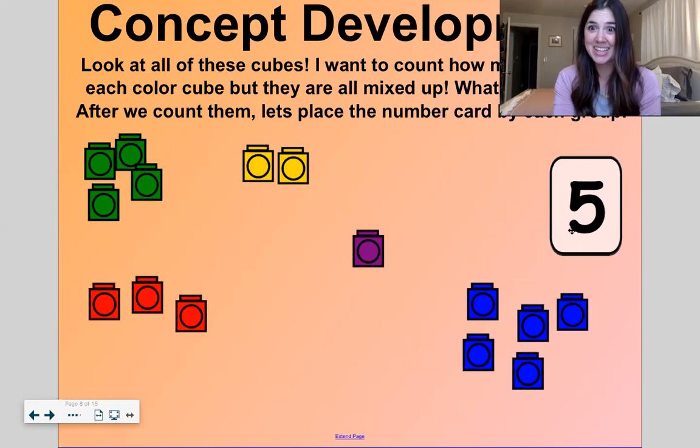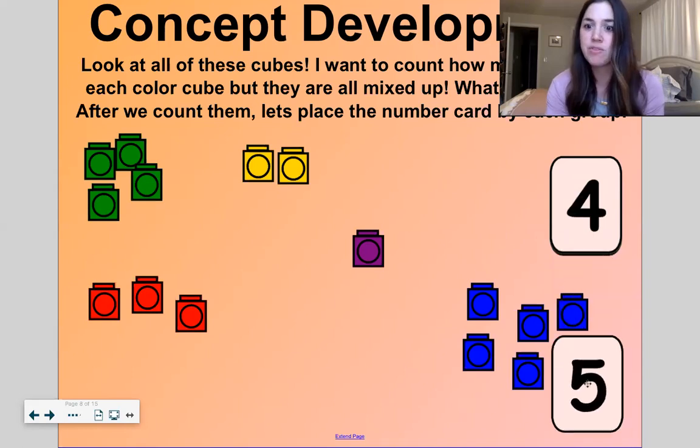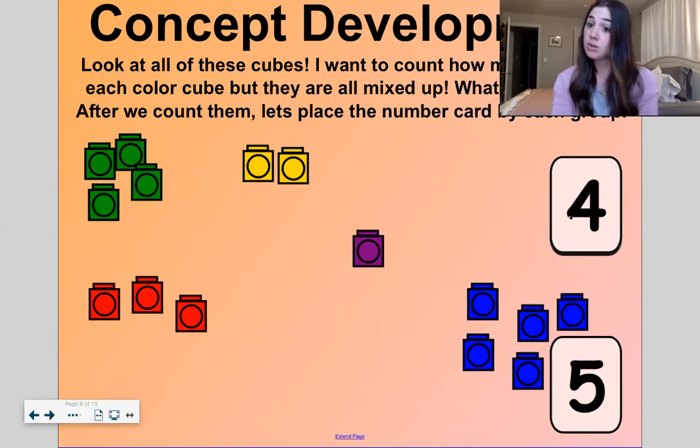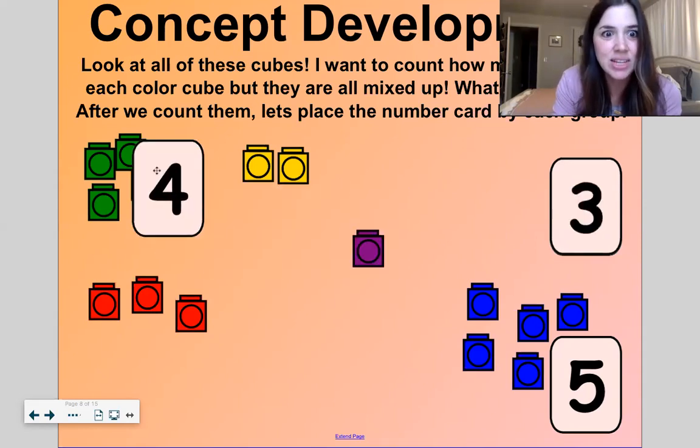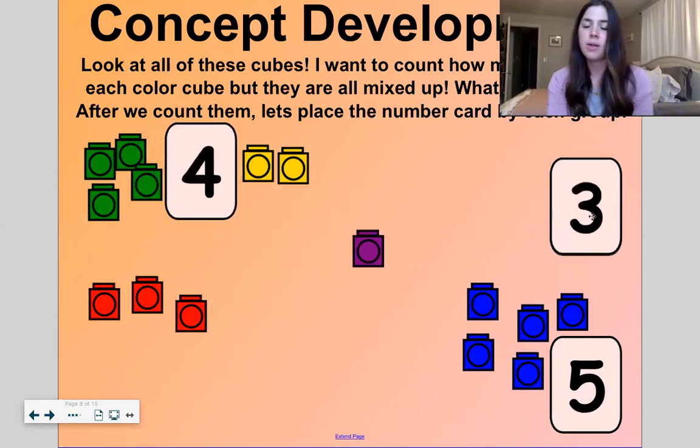So here is the number five. Hat, a neck, and a belly. One, two, three, four, five. There's five blue cubes. So I'm going to move that five to right here. Here's the number four. It looks like we're counting down. Which cubes are in a group of four? Green. So let's move four over here.